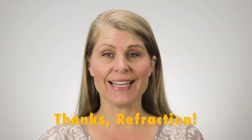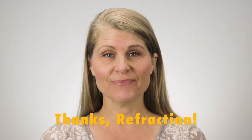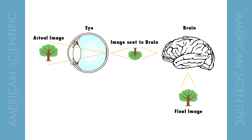You can thank refraction for your ability to see, and if your vision is less than perfect, you can also thank refraction for correcting it. When light enters our eyes it is focused to the back of the eyeball, where the retina detects the light and sends the message to the brain.